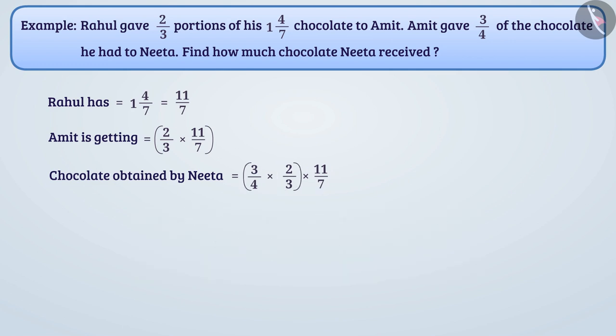By simplifying the parenthesis, we get the rational number 1/2. Now we multiply 1/2 and 11/7. This will give us the result 11/14. In this way, Neeta gets 11/14 of the total chocolate.